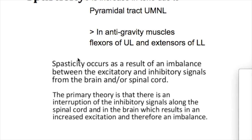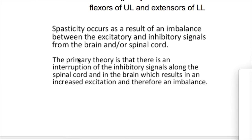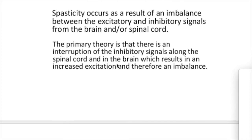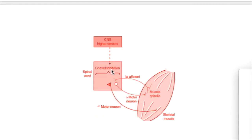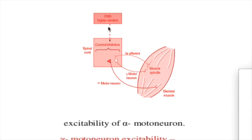Spasticity occurs as a result of an imbalance between the excitatory and inhibitory signals from the brain and spinal cord. The primary theory is an interruption of inhibitory signals along the spinal cord, which results in increased excitation and therefore an imbalance.